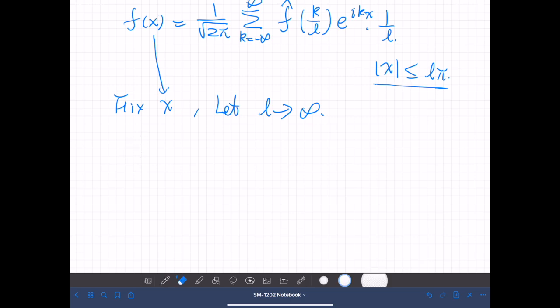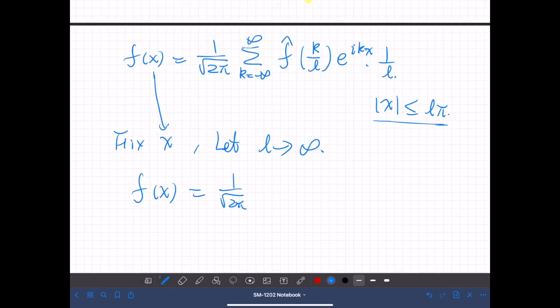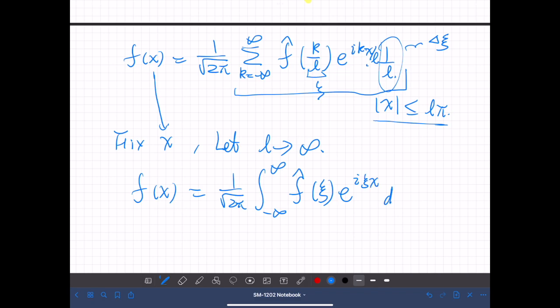So this is like a Riemann sum. K over L is probably, we should call it ξ, and this is Δξ. So this becomes the integral f hat of ξ e to the iξx dξ.